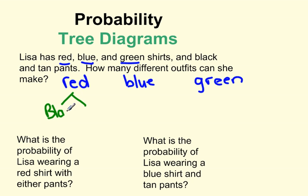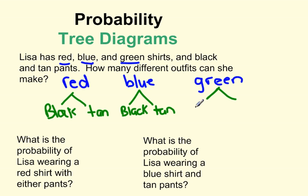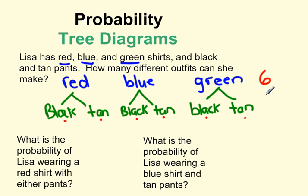She has black and tan pants, so that'll be our next branch. For each shirt she could pair it with black or tan pants. If she wore a blue shirt, she could wear the black pants or the tan pants. And if she wore a green shirt, she could wear with it the black pants or the tan pants. Counting across our lowest branch: one, two, three, four, five, six possible outfits.